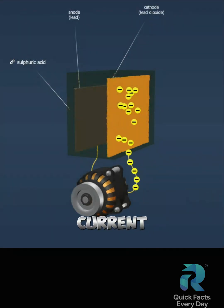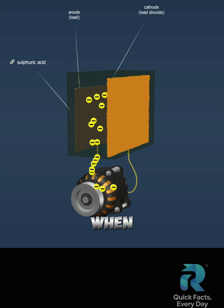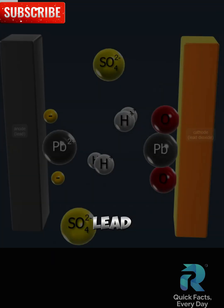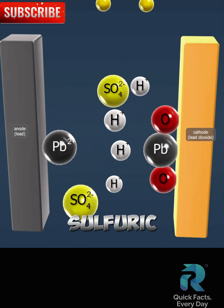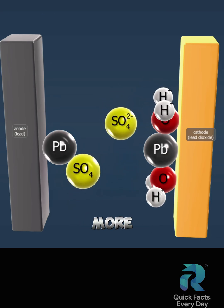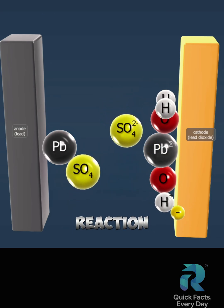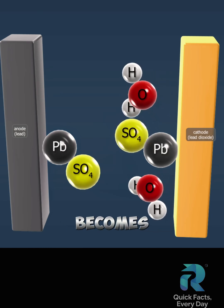Charging occurs when an electric current is applied to the battery. When the battery discharges, both lead and lead-dioxide react with sulfuric acid to produce lead sulfate. As more water is produced during this reaction, the sulfuric acid solution becomes diluted.